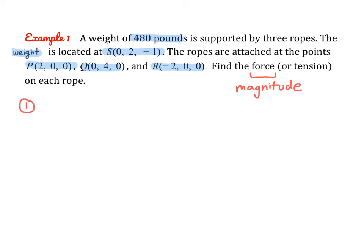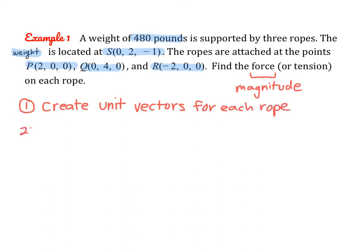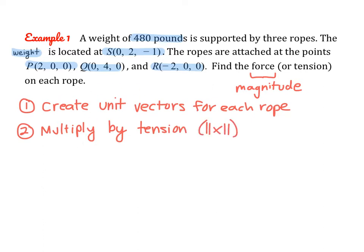So we're going to do a specific process. First, we need to create unit vectors for each rope. Then we multiply that unit vector by the tension on the rope, which is the magnitude. The unit vector moves the initial point to the origin and sets the length to 1, and then we adjust it for the tension on each rope.